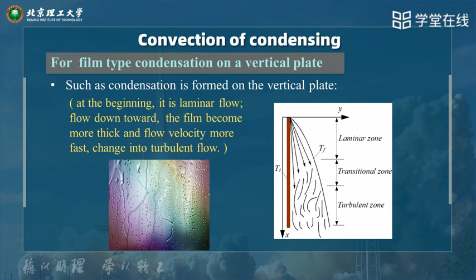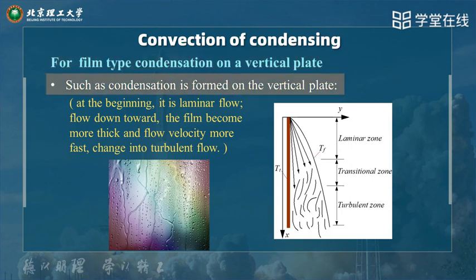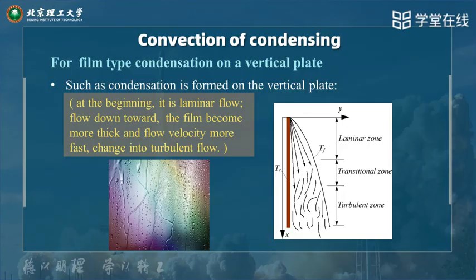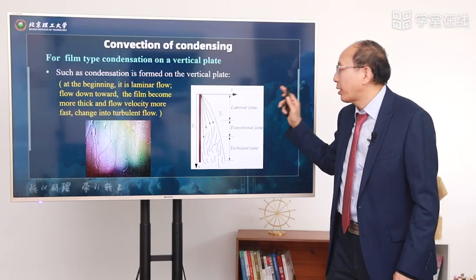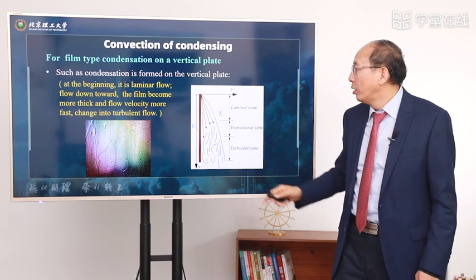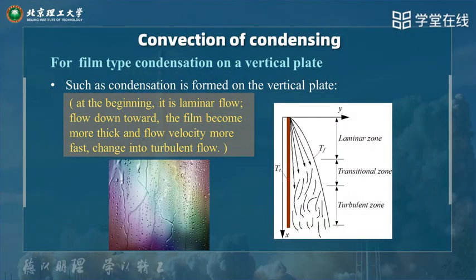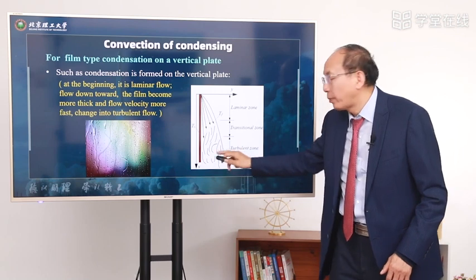For film type condensation on a vertical plate — a vertical plate is very typical. Condensation is formed on the vertical plate. At the beginning it is laminar flow. The film becomes thicker and flow velocity increases, eventually changing into turbulent flow in the lower region.